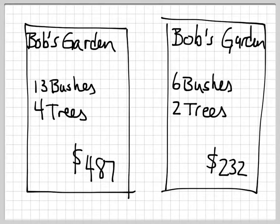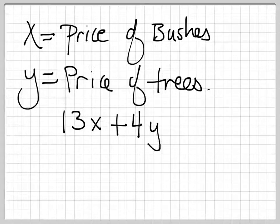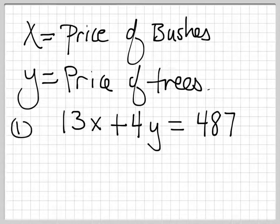Let's go back and look at our receipts. We have 13 bushes and 4 trees and paid $487. The price of 13 bushes would be 13 times the price of 1 bush. So we get 13 times x plus 4 times y equals $487. And we get this from receipt number 1.